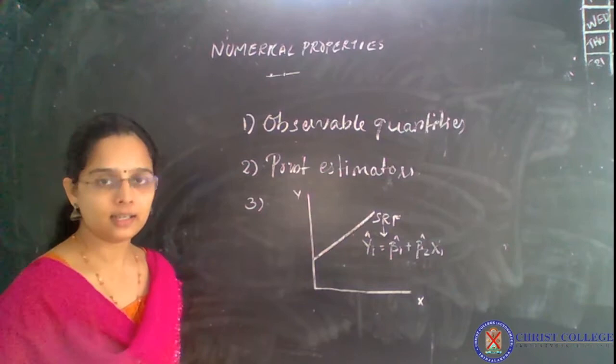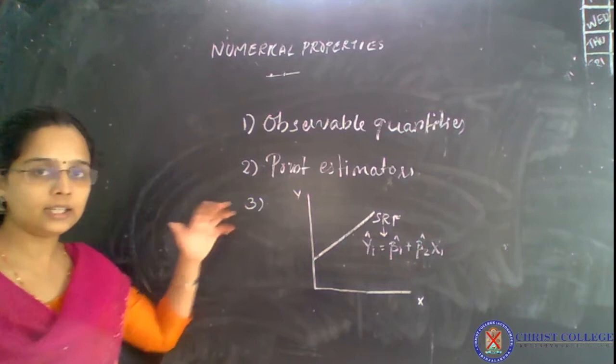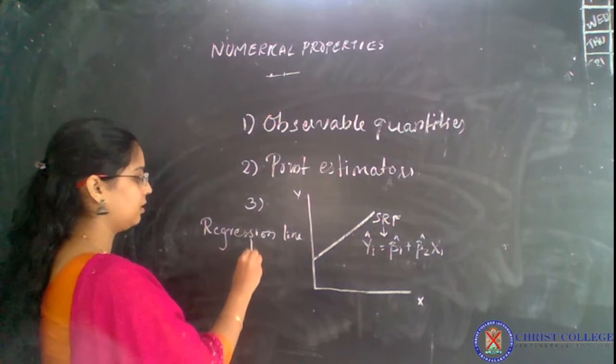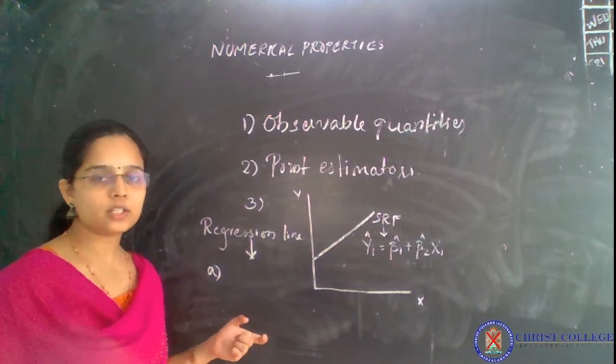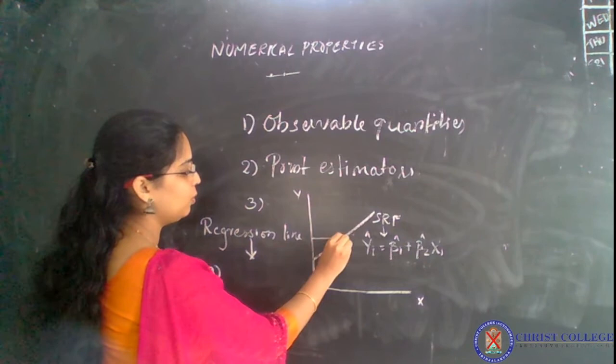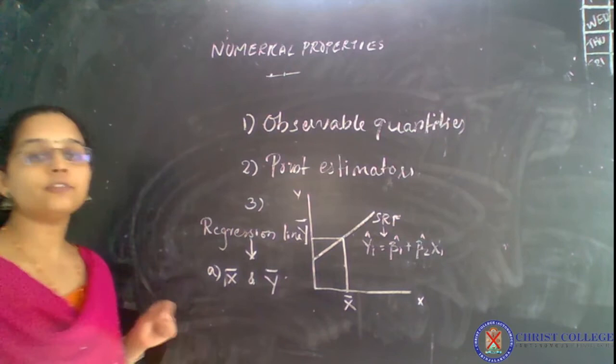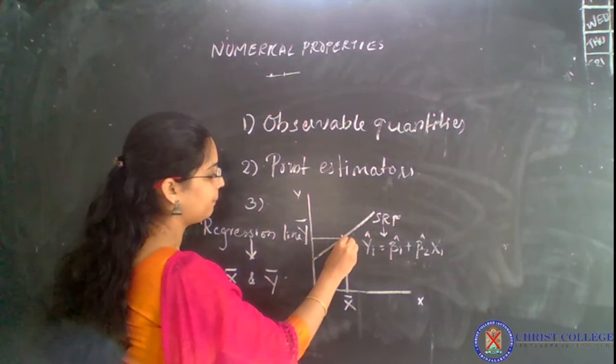In numerical properties, the third property we have to go into in detail is to identify the properties of the regression line. With regard to the regression line, the first property is that this regression line will pass through the mean values of x and y — that is, it passes through x̄ and ȳ.